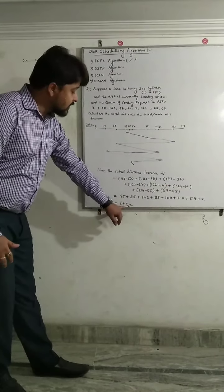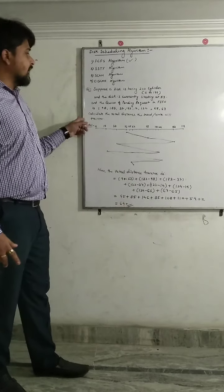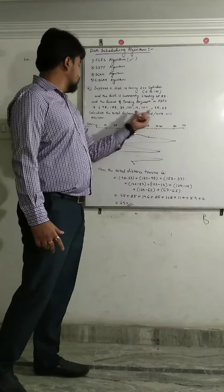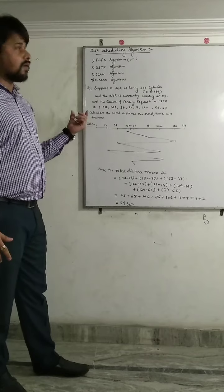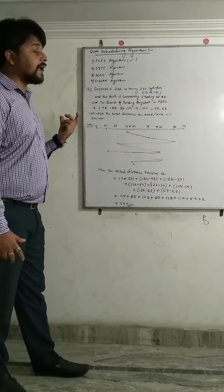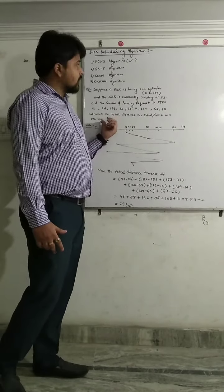we get 640, which is the total read and write traversing distance of the disk through FCFS algorithm. Thank you.